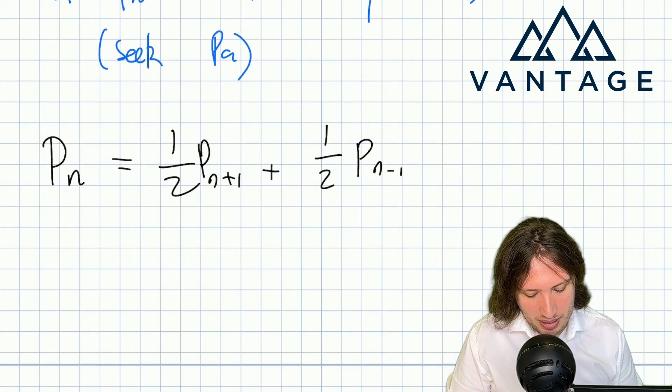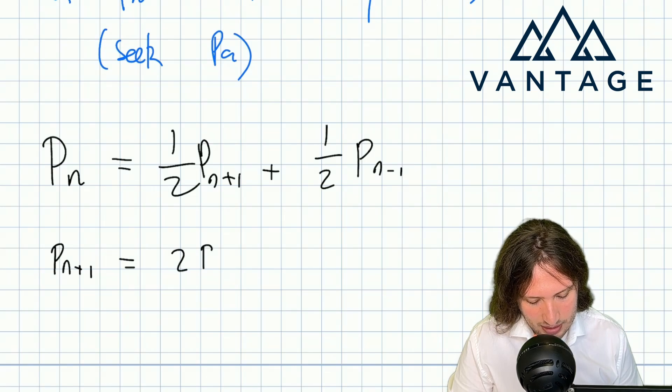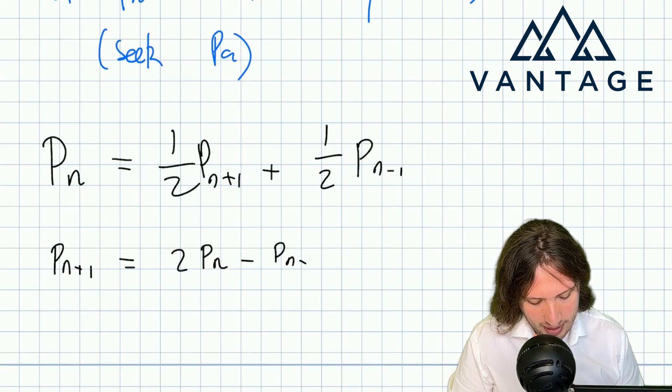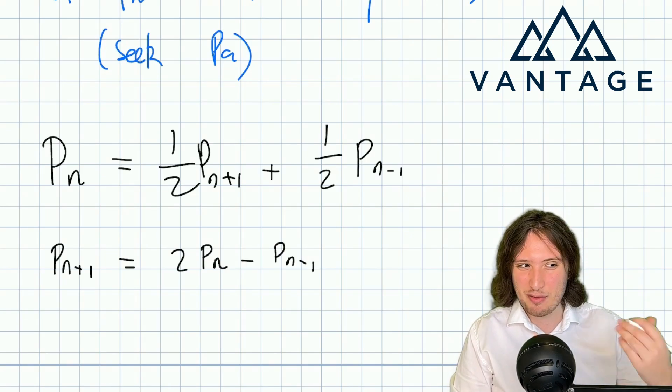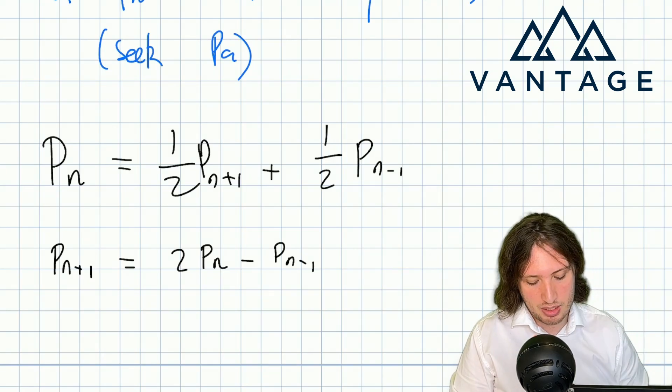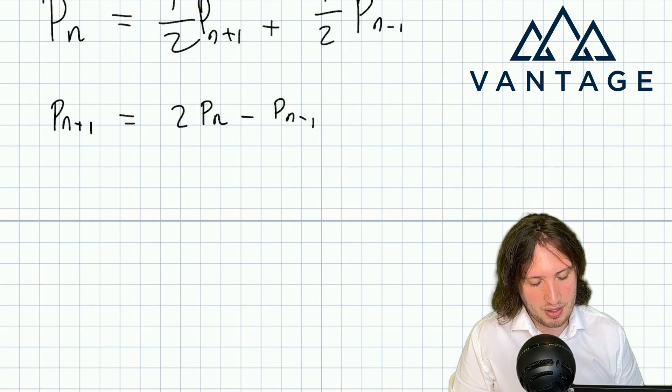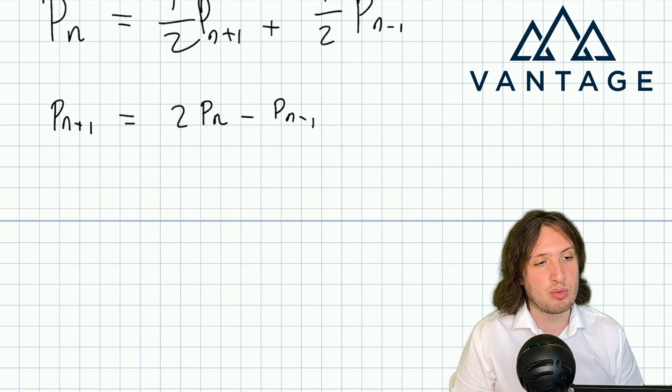Let's make P_{n+1} the subject because it's the one with the biggest index. So P_{n+1} = 2P_n - P_{n-1}. Let's just see if we can spot a pattern if we start building up from an initial value.